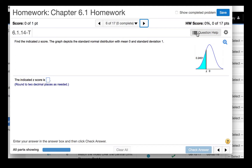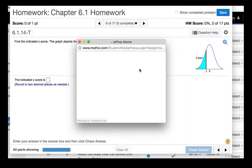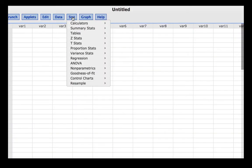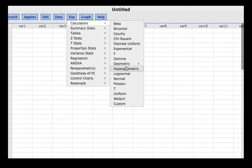So we will begin by clicking question help, then click StatCrunch, then click Stat, Calculators, Normal.